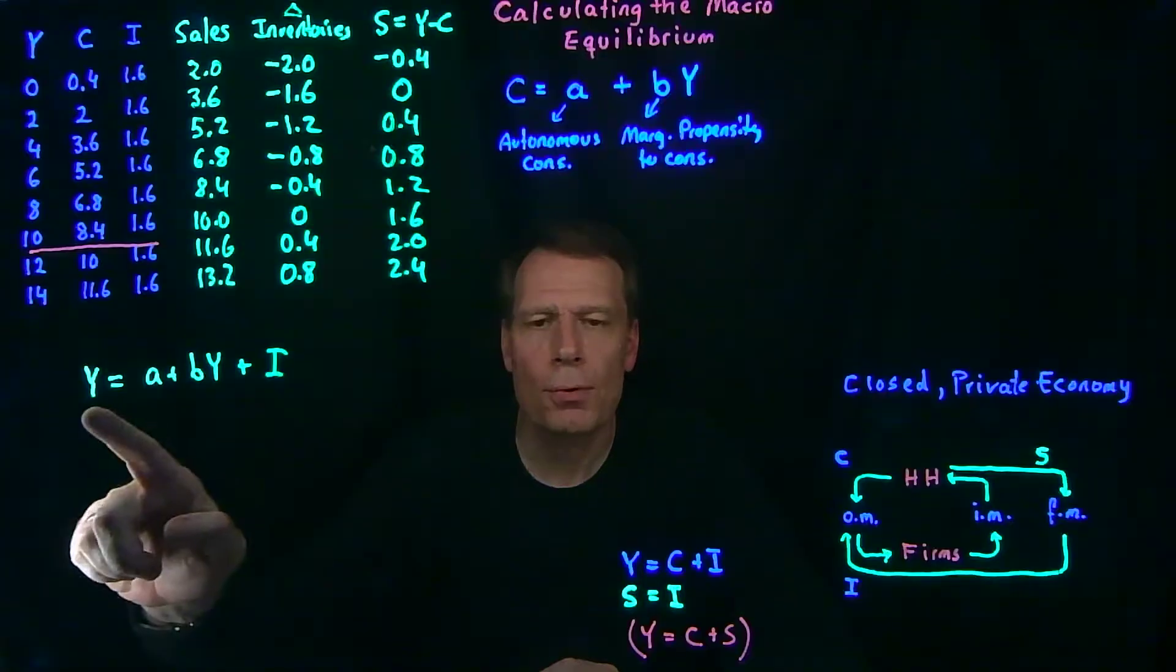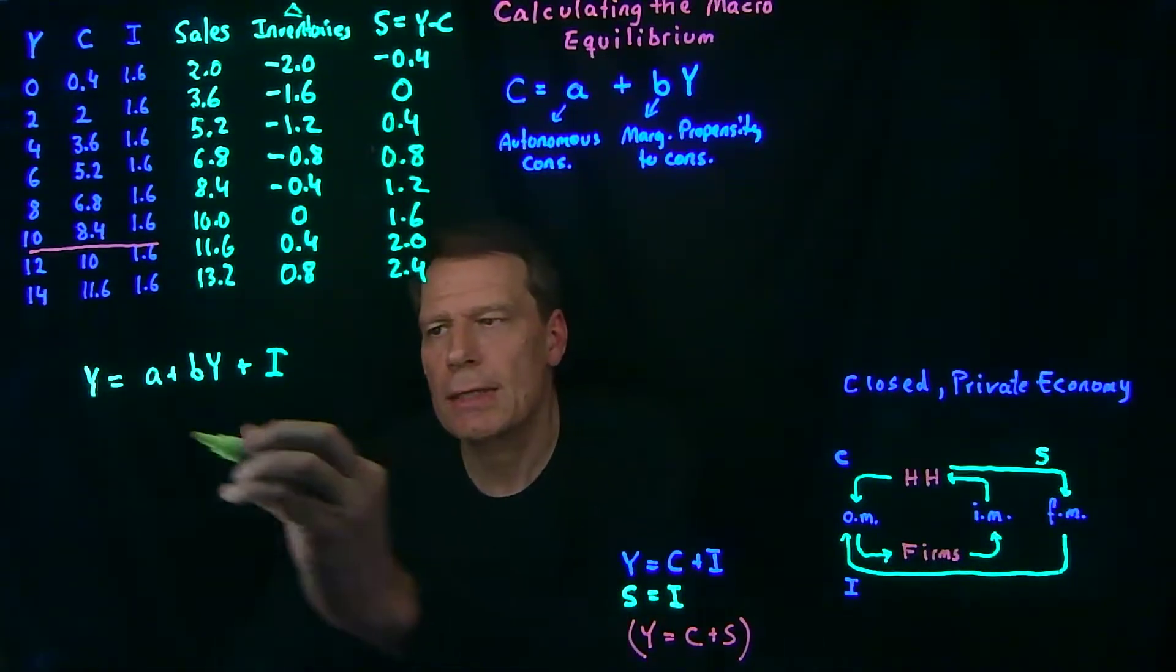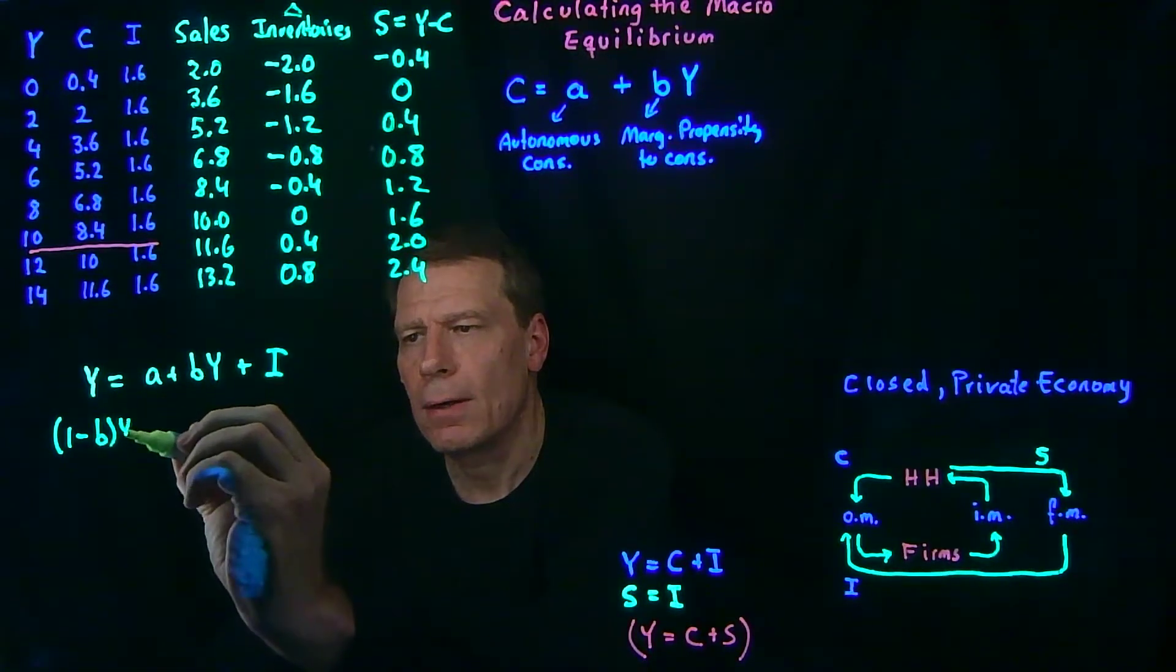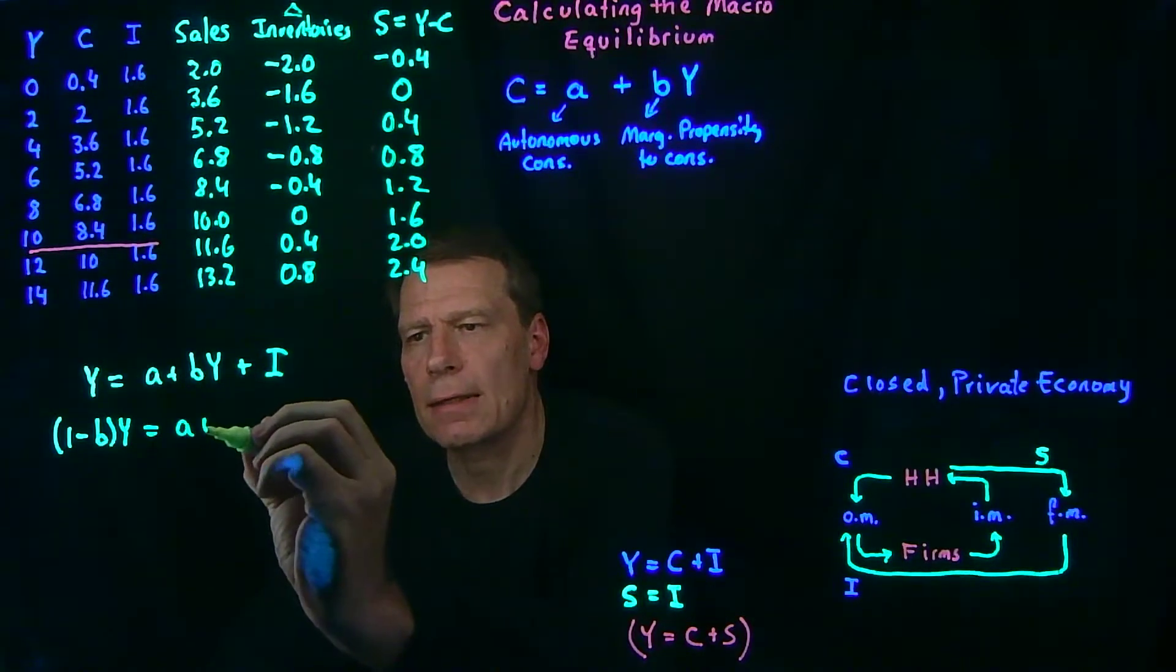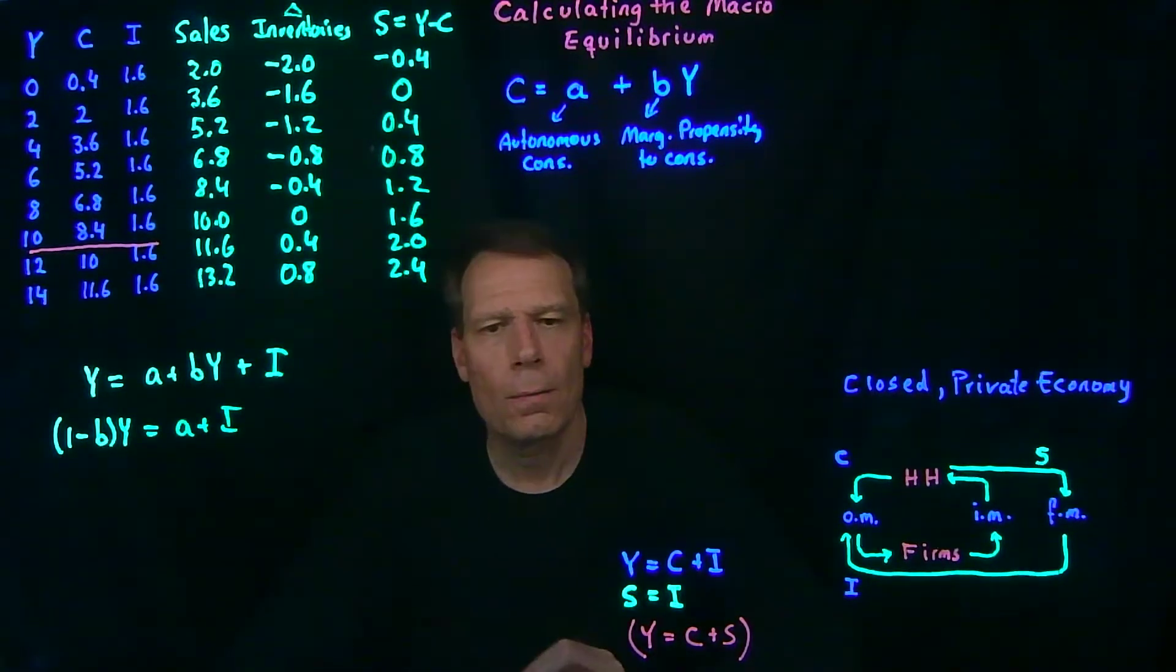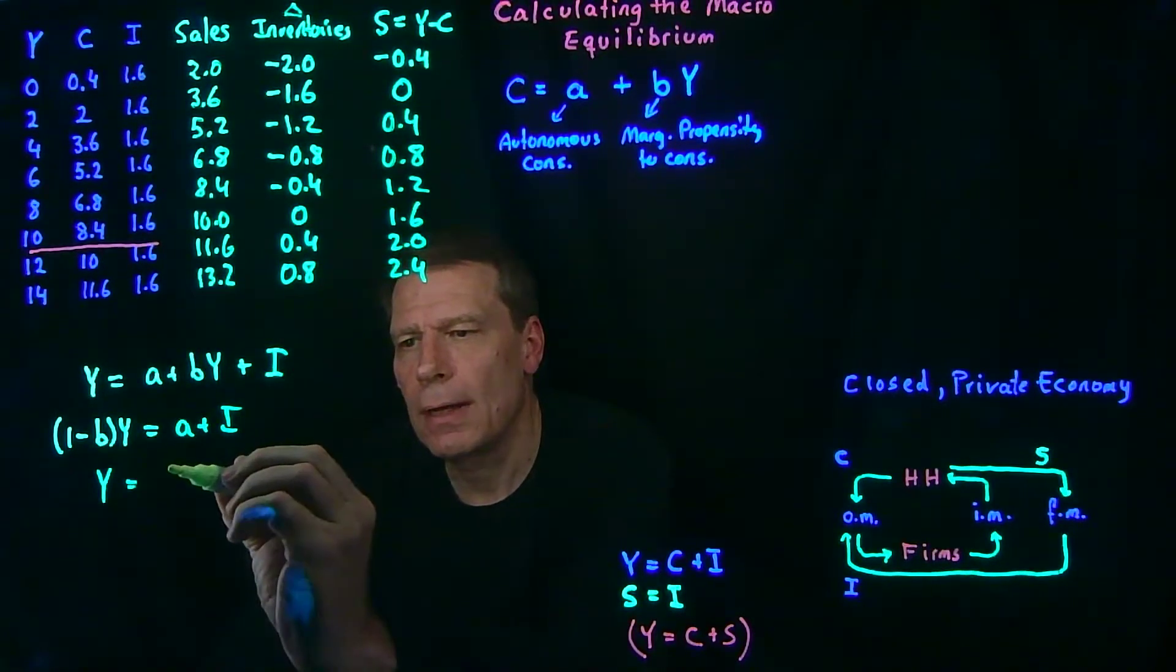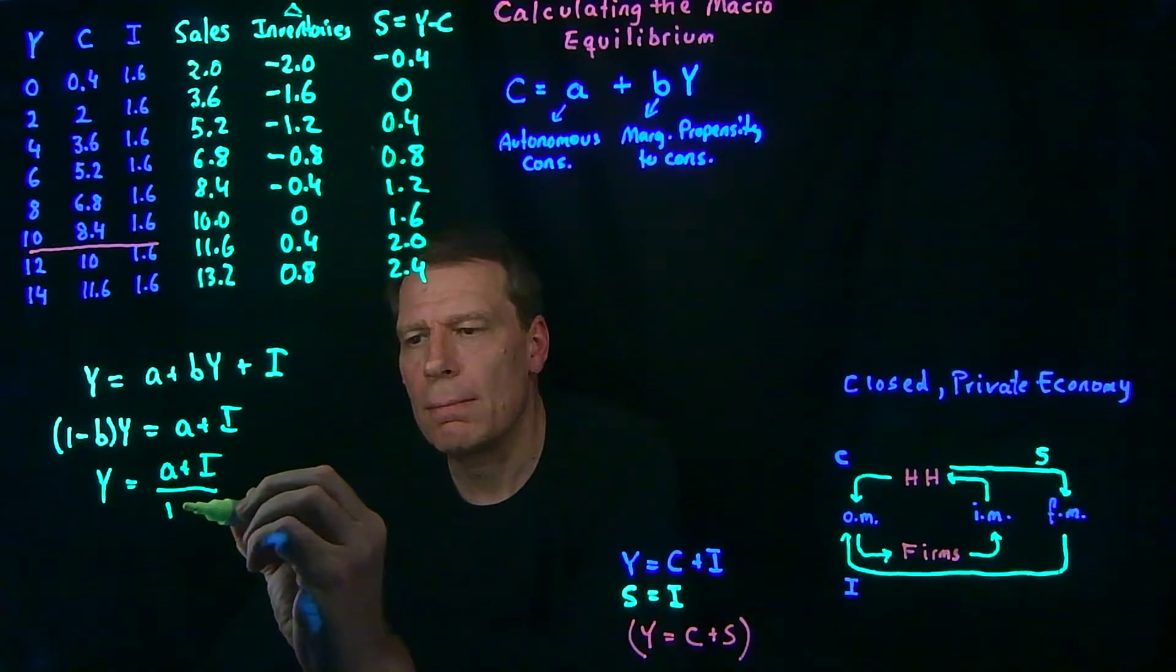Now we have income on both sides, so we'll subtract B times Y from both sides and we'll get 1 minus B times Y on the left-hand side and we'll have A plus I left on the right-hand side. We can then solve for Y, and we get that Y is equal to A plus I divided by 1 minus B.